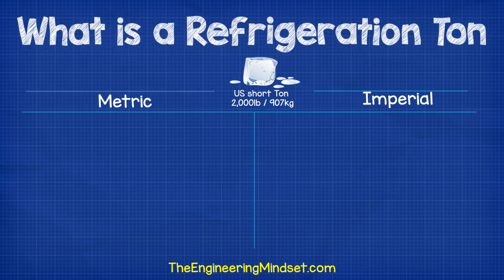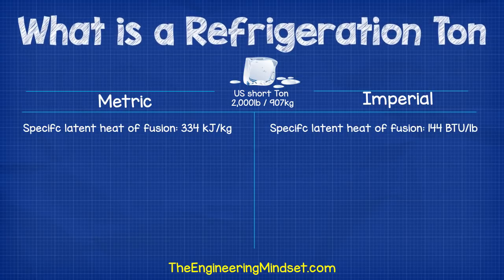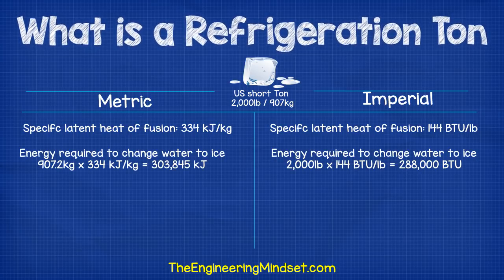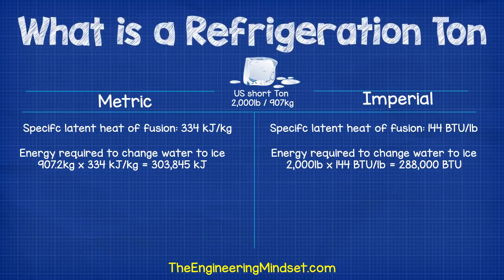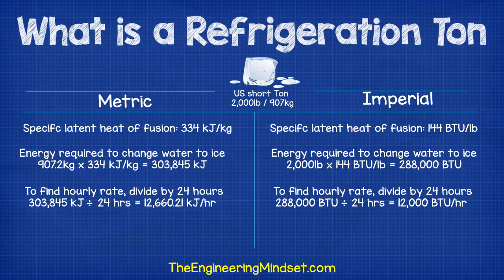A short ton is equal to 907 kilograms or 2,000 pounds. The latent heat of fusion for ice is 334 kilojoules per kilogram or 144 BTUs per pound. To calculate the latent heat cooling load, just multiply the respective units together. To convert this weight of water into ice within 24 hours, on the metric side you need to extract 303,845 kilojoules, or in BTUs 288,000. To find the hourly rate of cooling, divide by 24 hours. On the metric side: 303,845 kilojoules divided by 24 hours equals 12,660.21 kilojoules per hour. On the imperial side: 288,000 BTUs divided by 24 hours gives us 12,000 BTUs per hour.